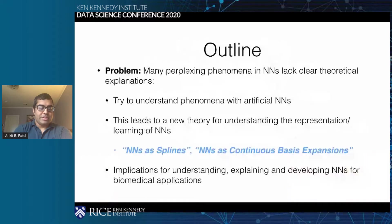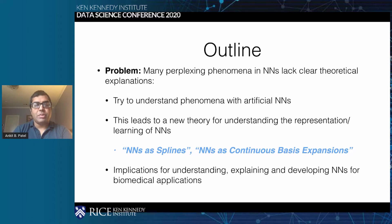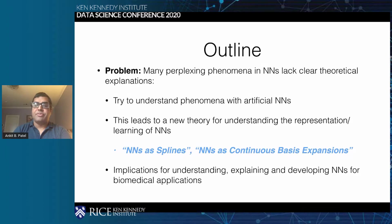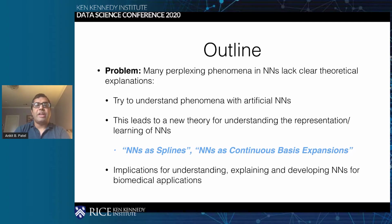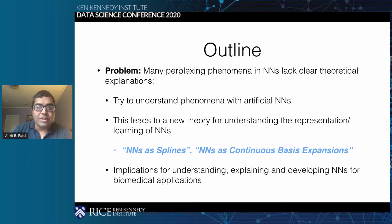Just to give you the punchline ahead of time, since we have very limited time: there are many perplexing phenomena inside neural networks that lack clear theoretical explanations. You may have heard people talk about neural networks as black boxes — this is what they mean. However, the applications of neural networks, especially for making high-accuracy predictions in biomedical sciences and others, have seen dramatic advances in the past five to ten years. The engineering and the applications have outstripped the understanding.